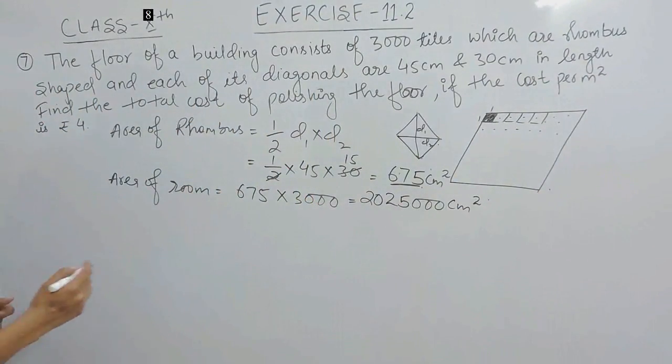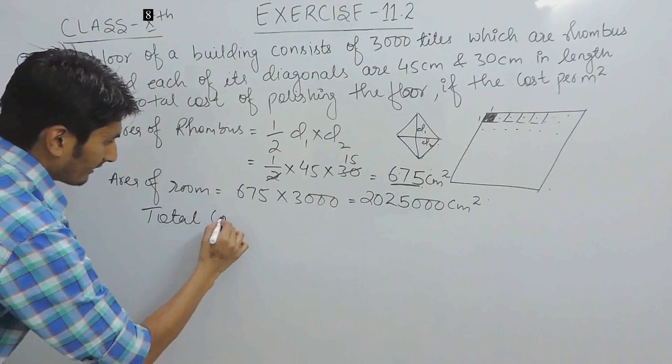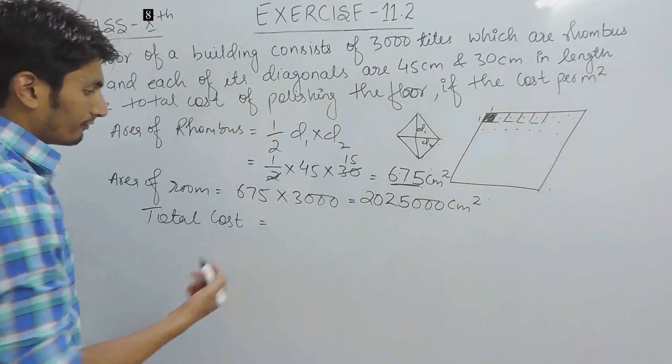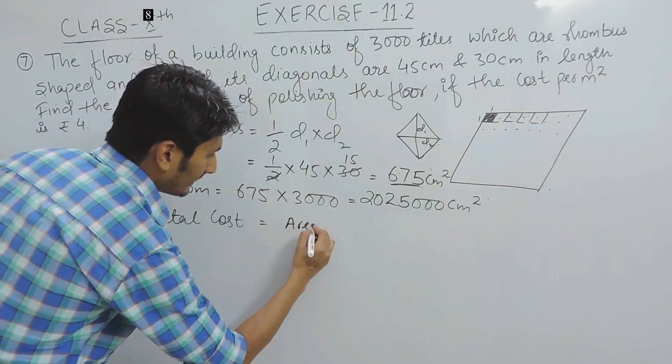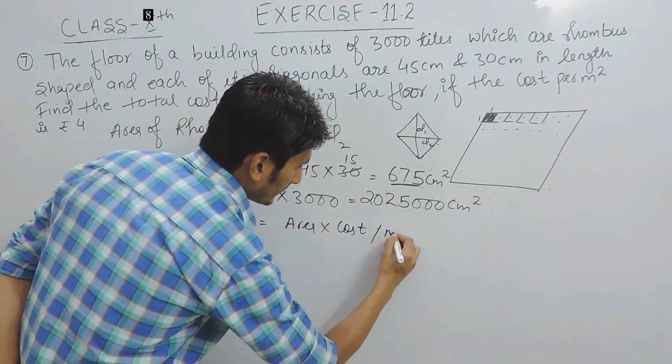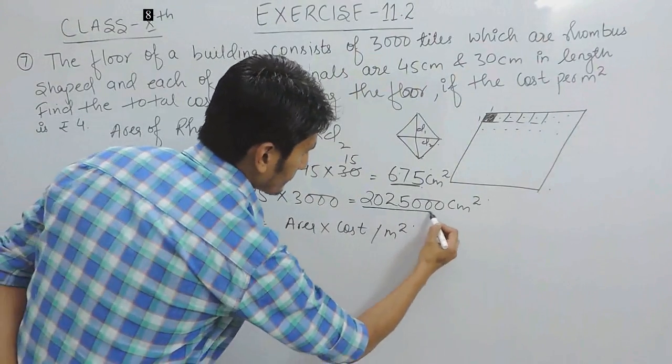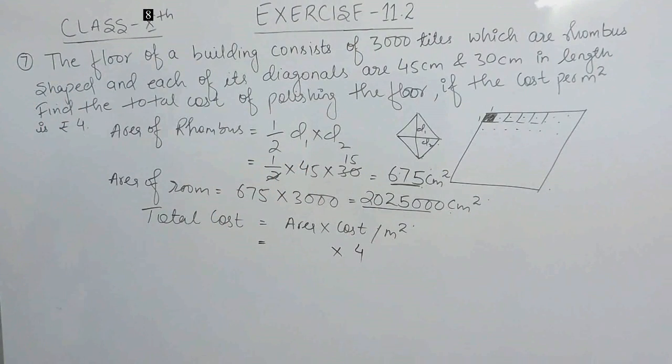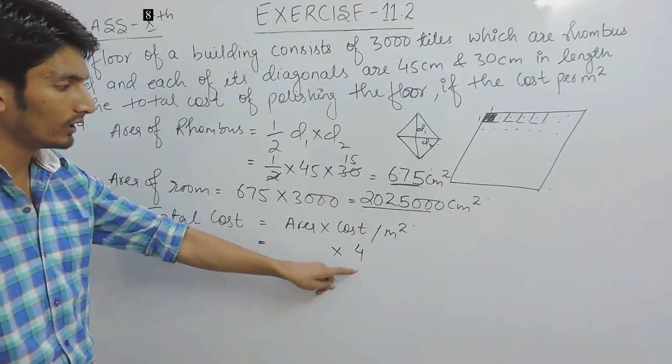Now, if I have to find the total cost which I have to bear for polishing this whole floor, I have to multiply the whole area with the cost per meter square. I know the area is this and the cost per meter square is rupees 4.